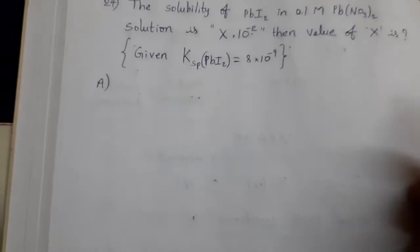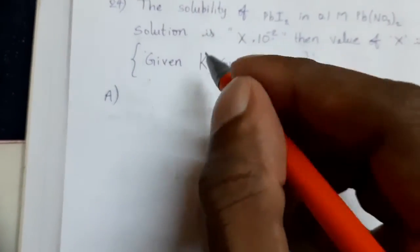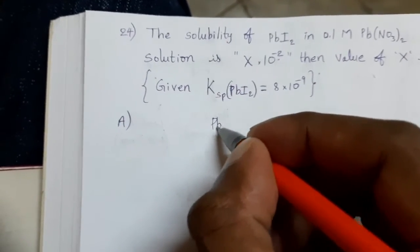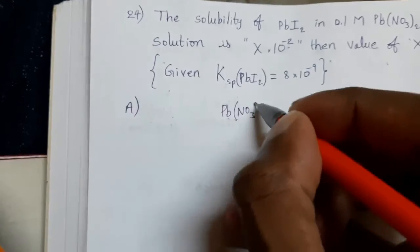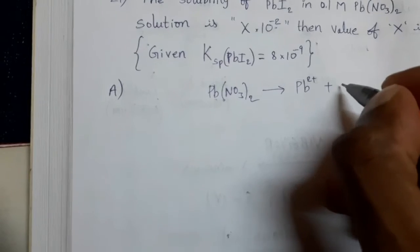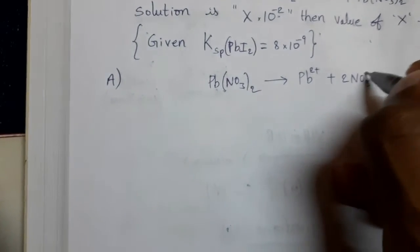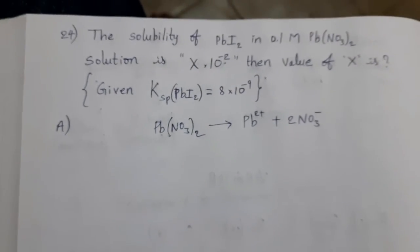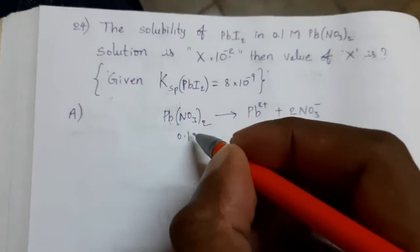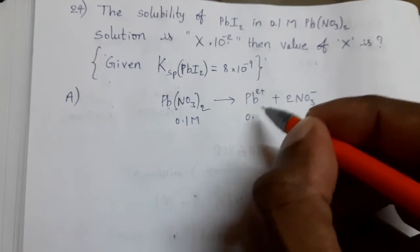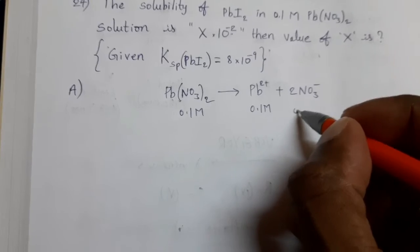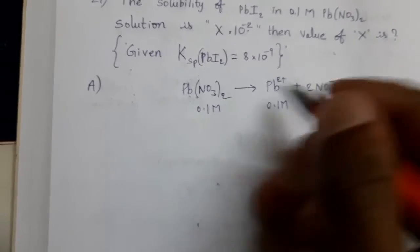Okay, write down this. Pb(NO3)2 gives rise to Pb2+ plus 2NO3-. What is the concentration of Pb(NO3)2 in the given question? 0.1 molar. Here also 1 mole of lead iodide. So, concentration 0.1 molar. 2 moles means 0.2 molar.